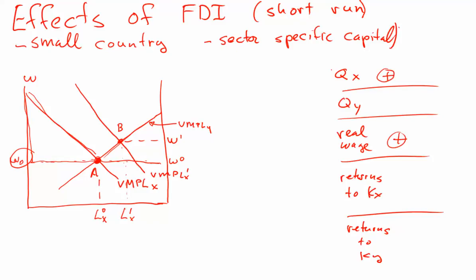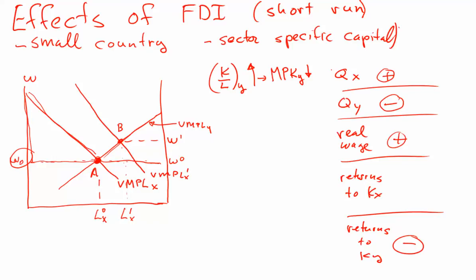We've got the same amount of capital in Y but less labor in that sector, because it's being drawn into the X sector — so the production in the Y sector is going to fall. As labor leaves sector Y going into sector X, the capital-labor ratio in Y is going to tend to rise because the capital stock is the same. That's going to translate into a decrease in the marginal productivity of capital in Y. Prices have remained the same, so rental rates in sector Y definitely fall.